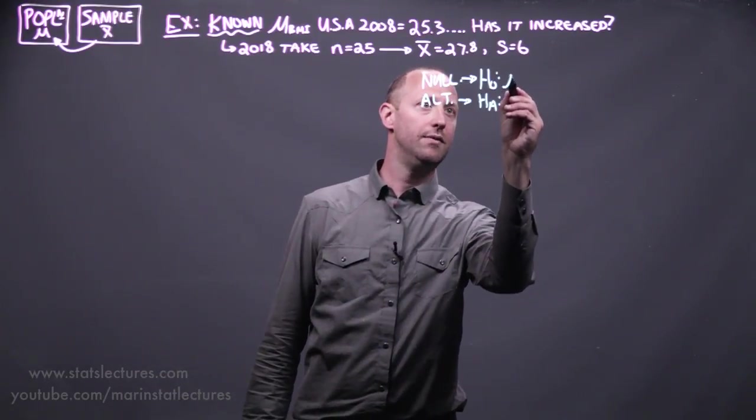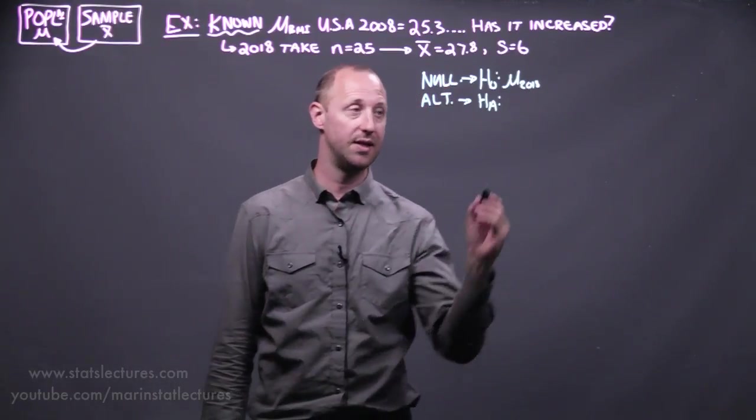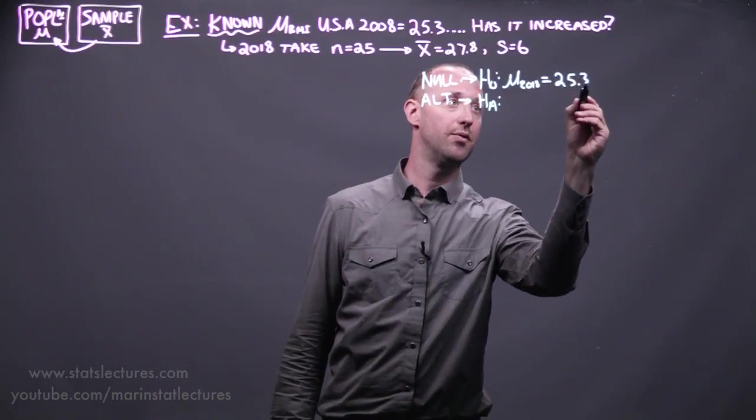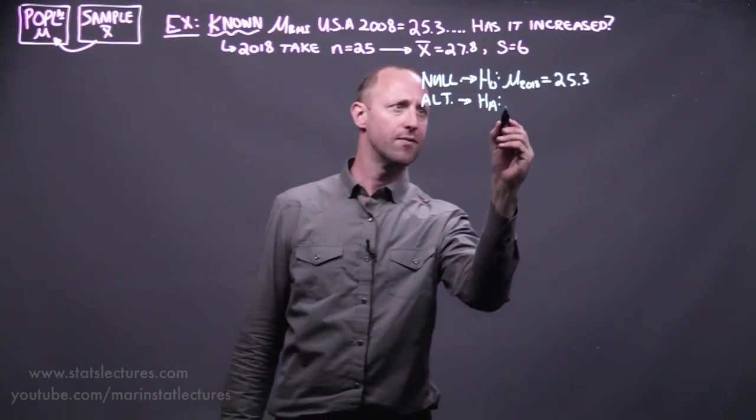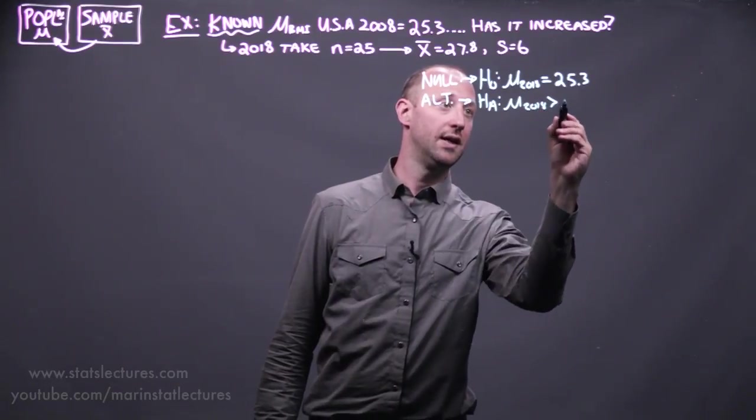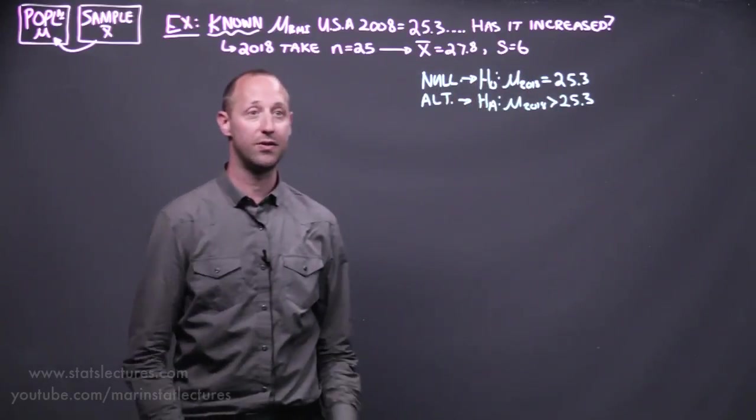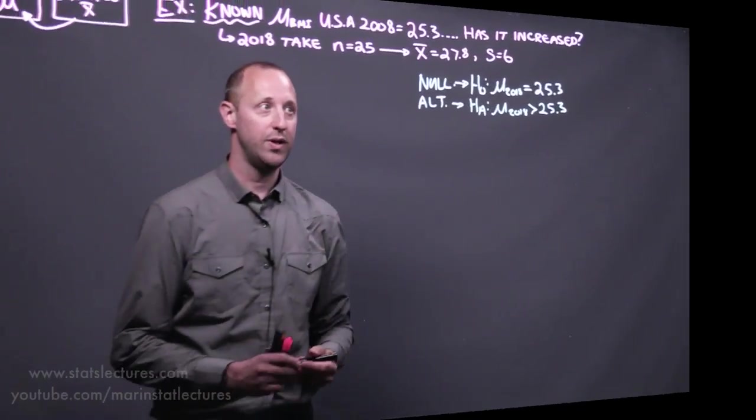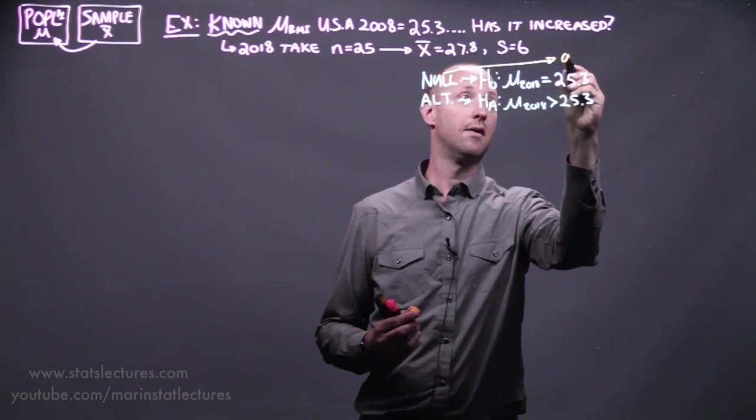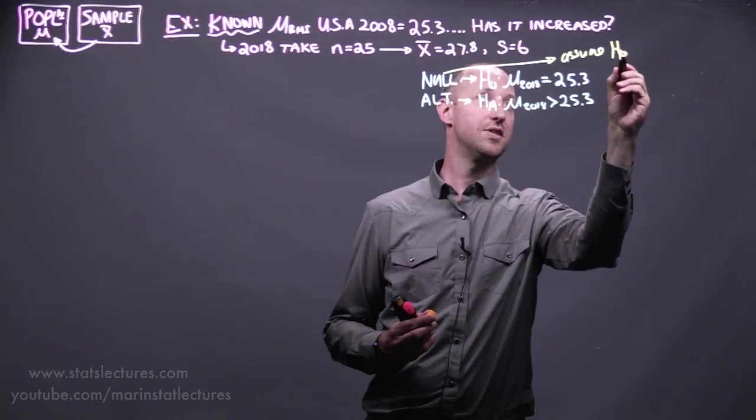So here, we're going to start by assuming that the population mean in 2018 hasn't changed. It's still 25.3 versus the alternative that the mean in 2018 is larger than what it was in the past. That there has been an increase. When doing these hypothesis tests, we start by assuming the null hypothesis to be true.